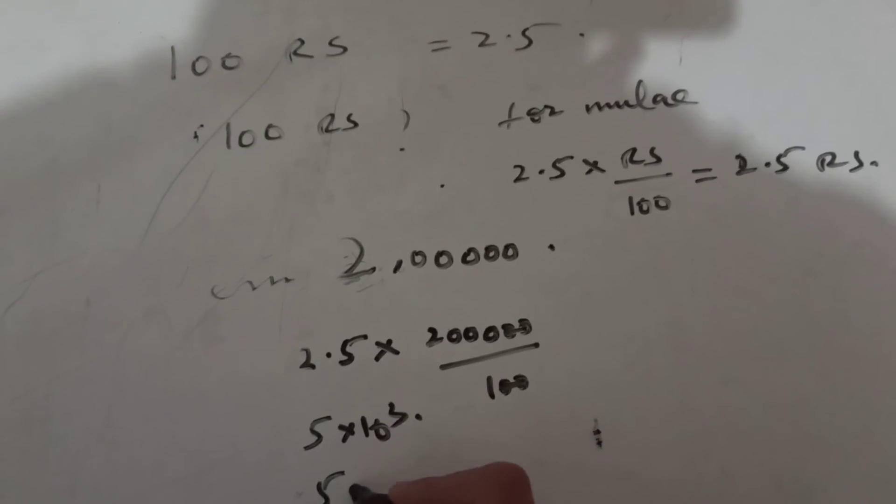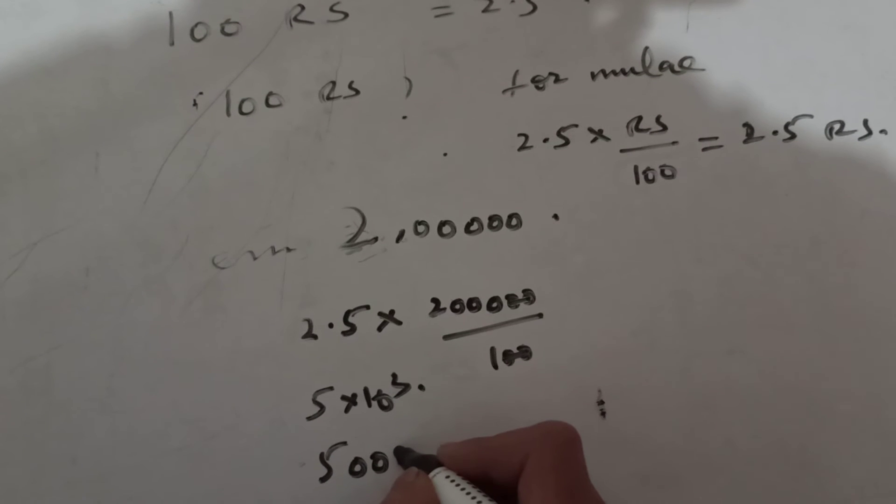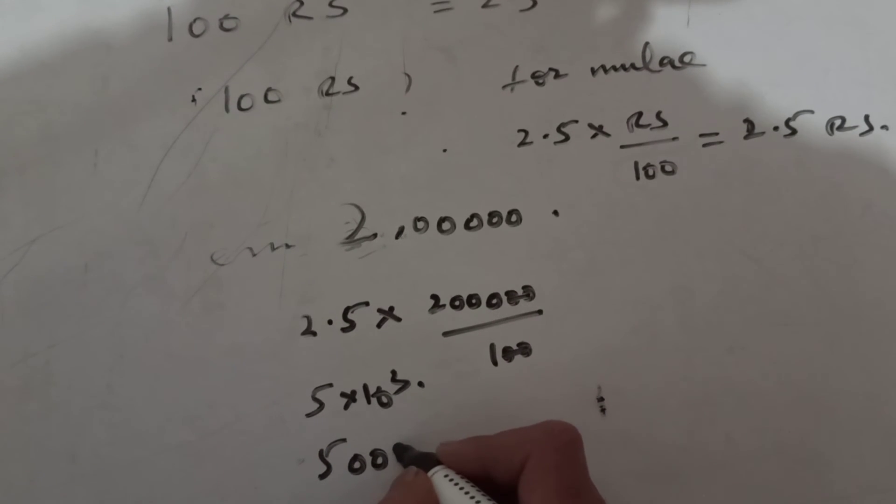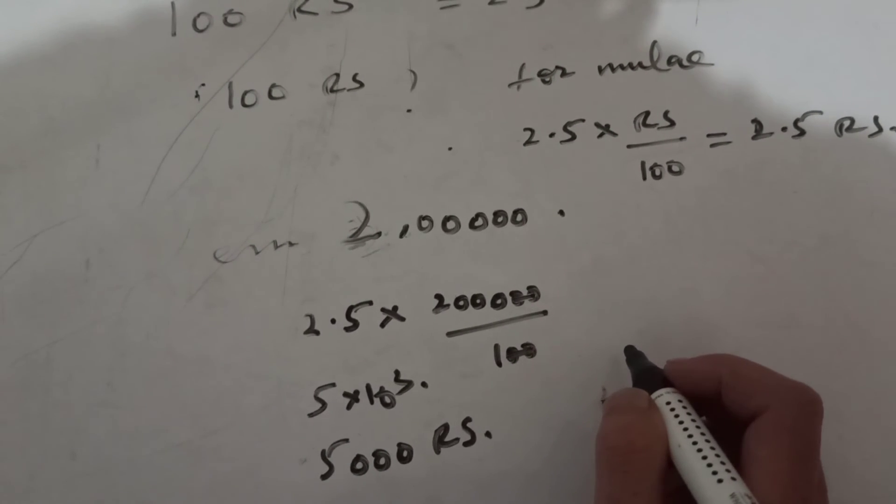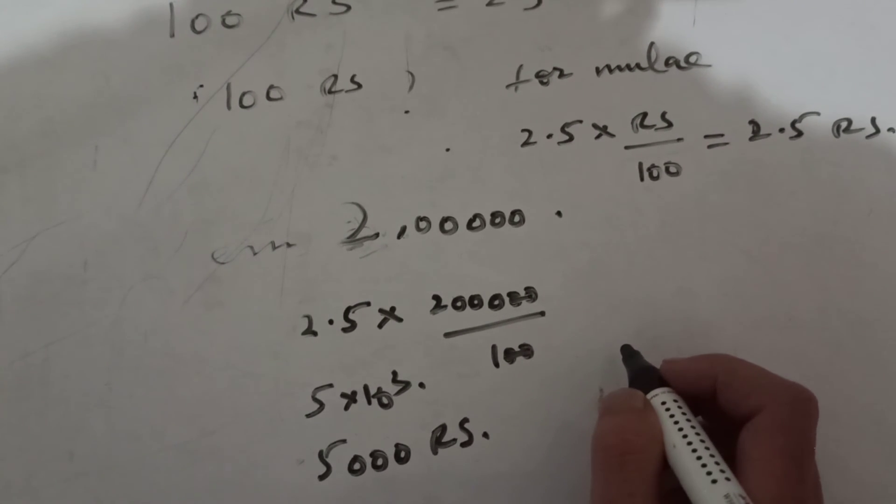That is nothing. 5 thousand rupees. That is the accurate value for the zakat.